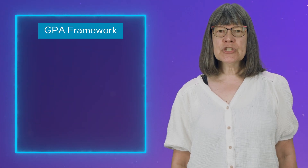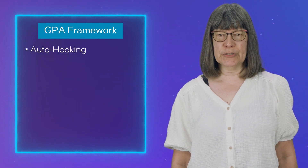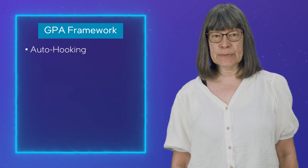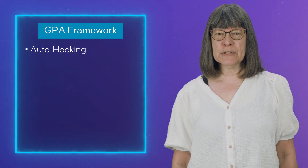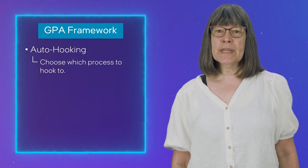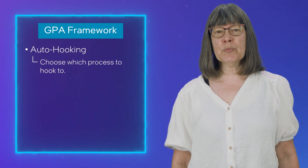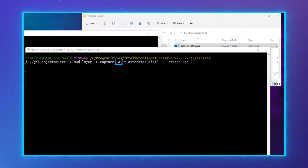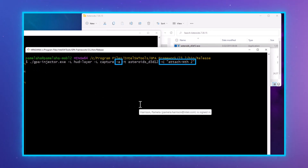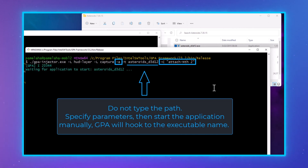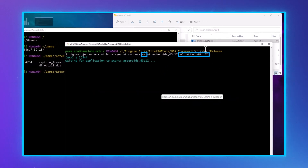Now for GPA Framework Highlights. The first GPA Framework highlight is our new auto-hooking feature. Several games have multiple processes or multiple windows. Sometimes the main part of the game is not the first process, so you want to be able to attach to the process of your choice. With the auto-hooking feature, you can choose which process to hook to. To enable auto-hook, use the "-a" option, then attach to the nth process with either "-attach condition" or "-C". You can see here the command to attach to the second process.